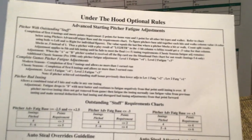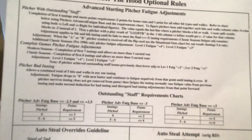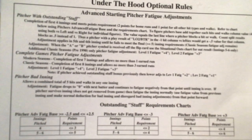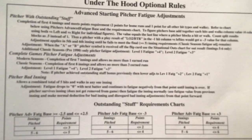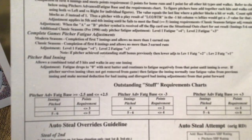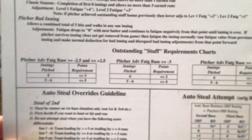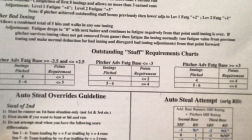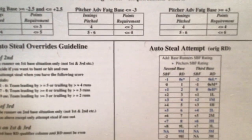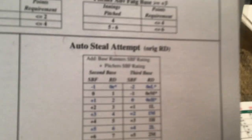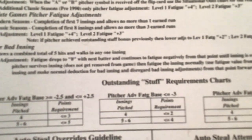Then you will have some loose charts — stuff you don't reference as often. You have optional rules including an advanced starting pitcher fatigue adjustment, which I highly recommend, especially the outstanding stuff. You look at how the pitcher has performed over the first four innings and take into context how good a pitcher was he. If he was overperforming and was a mediocre pitcher, it would be less of a barrier than it would be for an outstanding pitcher, because the outstanding pitcher normally pitches at a high level.